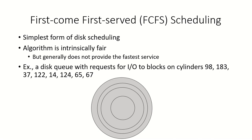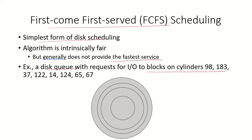This video discusses First Come First Served (FCFS) disk scheduling. Similar to FIFO, this is the simplest form of disk scheduling — whichever request arrives first is handled first. While fair, this approach usually does not provide fast service. For example, assume there is a disk queue with requests for blocks on cylinders 98, 183, 37, and so on.